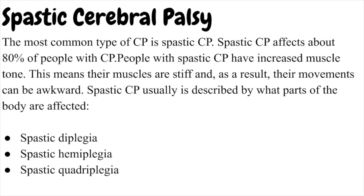Spastic hemiplegia affects only one side of a person's body; usually the arm is more affected than the leg. Spastic quadriplegia is the most severe form of spastic CP and affects all four limbs, the trunk, and the face. People with spastic quadriplegia usually cannot walk and often have other developmental disabilities such as intellectual disability, seizures, or problems with vision, hearing, or speech.